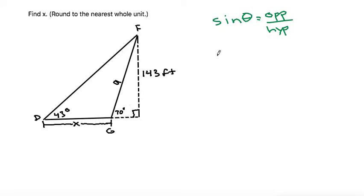Plugging the numbers that we have in, we get sine of 70 degrees is equal to the opposite side, 143, divided by side length A, which is the hypotenuse. Now, keep in mind that since 143 has a unit of feet, A will also have a unit of feet.